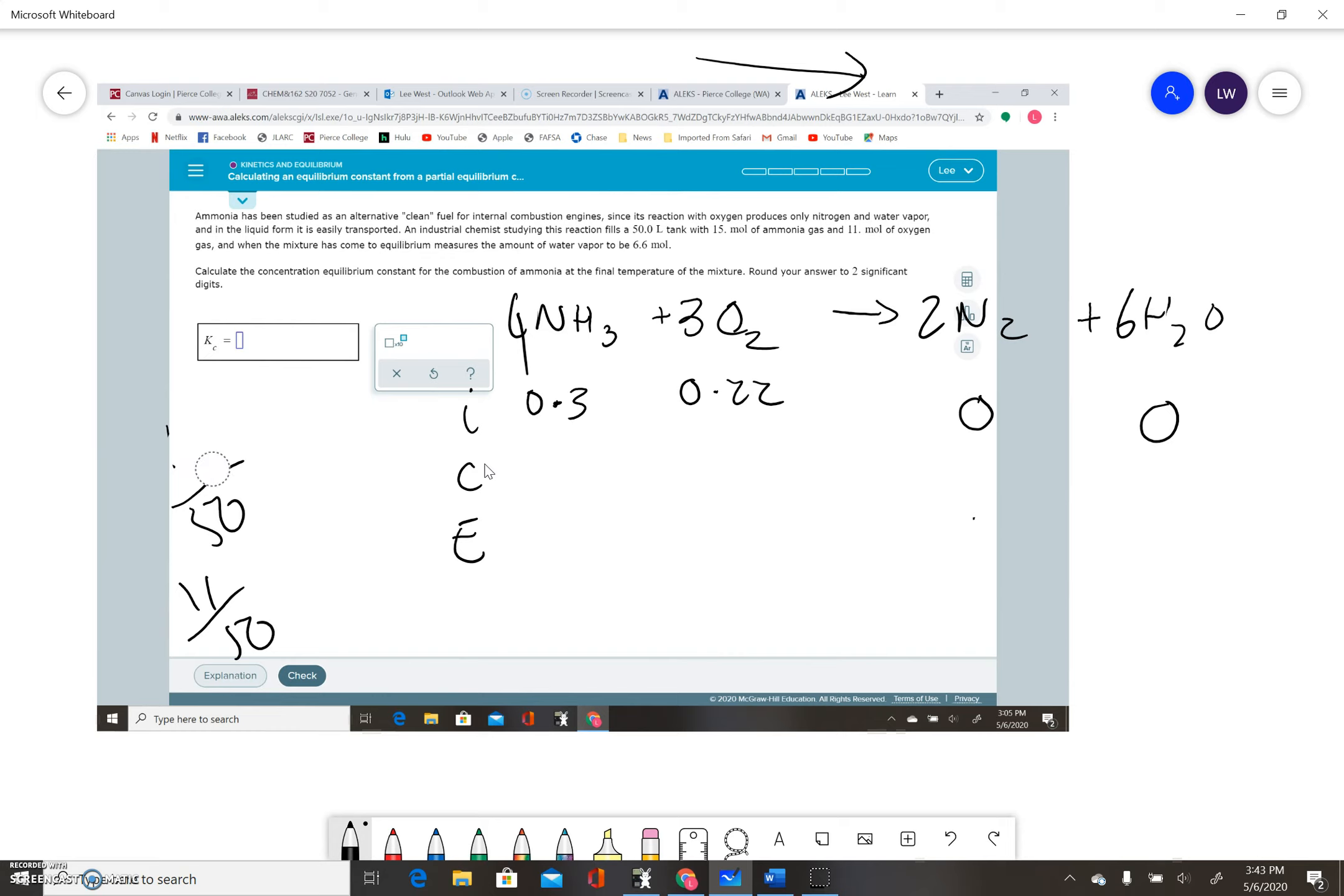I didn't round anything because they want me to give the answer at the end to two significant figures, and ALEKS can be a little fussy about that. Now what's going to happen? Well, I know it's going to go to the right. So this will go up by 2x and this will go up by 6x. Then this is going to go down by 4x and this will go down by 3x.